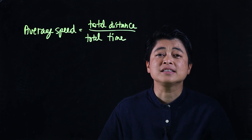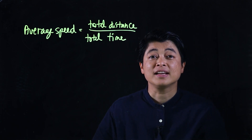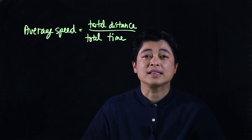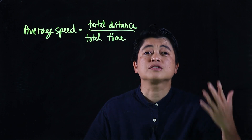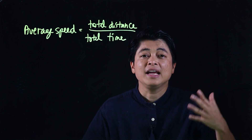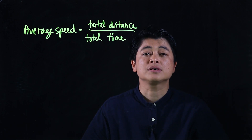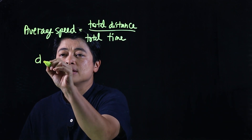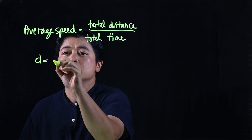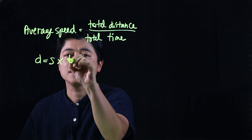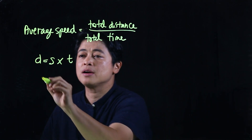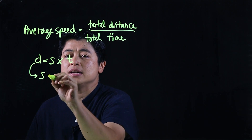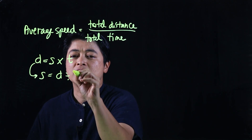It's best to train kids to write down the given every time so that it's easier for the brain cells to process. The given and formulas to be used are important. From the last lesson: distance is equal to speed times time, and from there we can get speed is equal to distance divided by time.